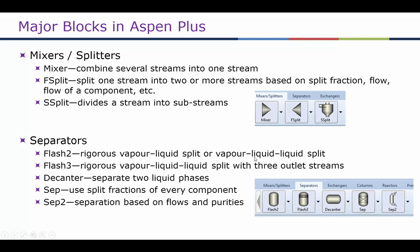As an option, another liquid stream can be added to Flash 2. Flash 3 differs in that its minimum requirement is three outlet streams: one vapor and two liquid streams. Flash 3 is used when the two liquids are immiscible and therefore form two separate liquid phases. A decanter is used to separate immiscible liquids — when two liquids in a mixture are immiscible, we can use a decanter to separate those two liquid phases.